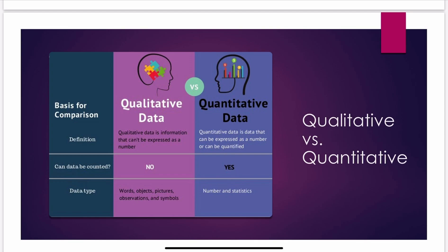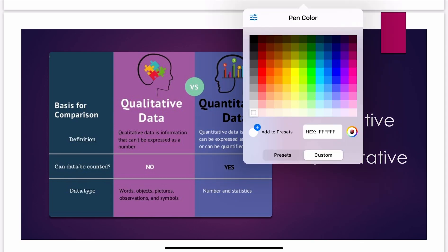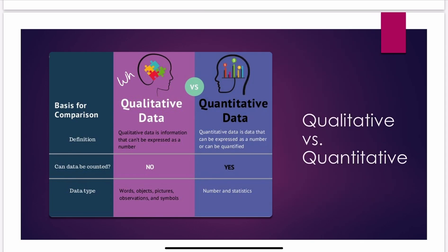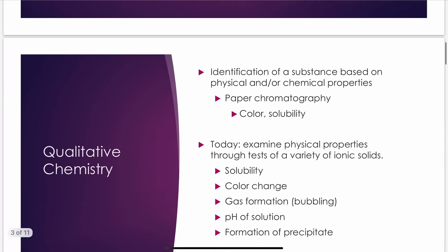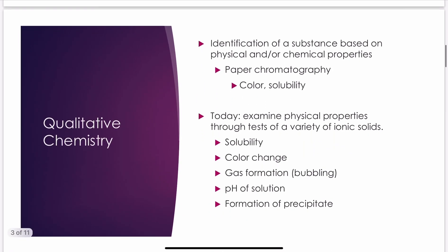Quantitative is looking at how much, while qualitative is looking at what. Qualitative chemistry involves identification of a substance based on physical and/or chemical properties.